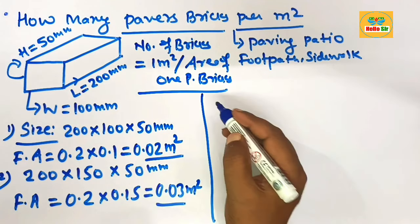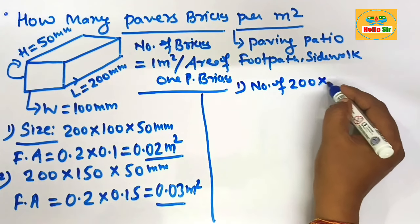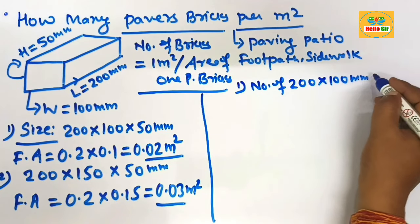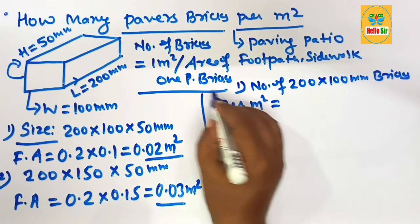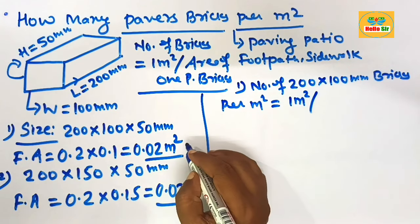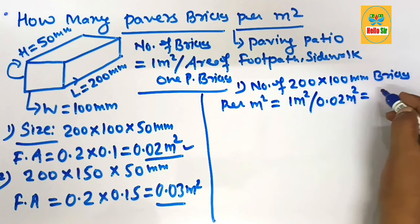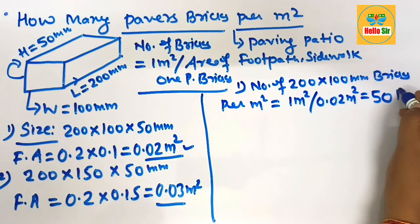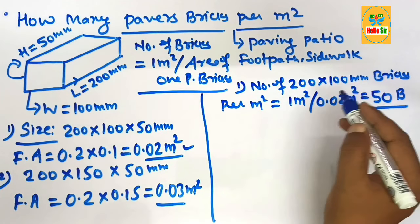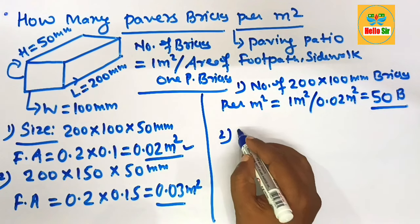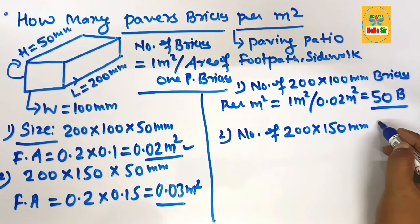Now let's find the number of the first size — 200 mm by 100 mm bricks — per square meter. The area of one square meter divided by the area of one brick (0.02 m²) gives 50 bricks. It means you need about 50 bricks of size 200 mm by 100 mm per square meter.